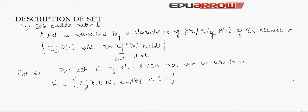For example: x is such that x belongs to the natural numbers and x is a multiple of 2, and n belongs to the natural numbers. This symbol denotes 'belongs to.'